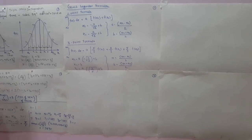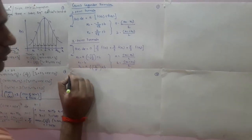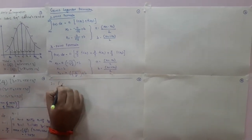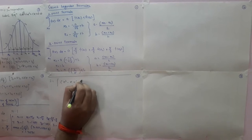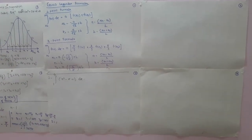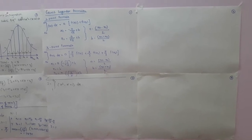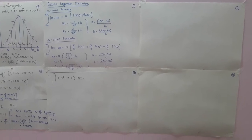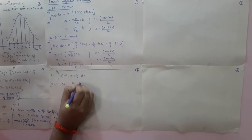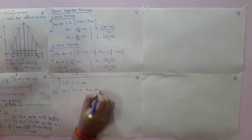Now we will solve a numerical based on these two formulae. Evaluate the integration of x cubed minus x plus 1 dx having limits from 1 to 4. Let us try to solve this step by step. First we will solve by using the Gauss-Legendre two-point formula. In the given numerical, x0 equals 1, xn equals 4, and f(x) equals x cubed minus x plus 1.